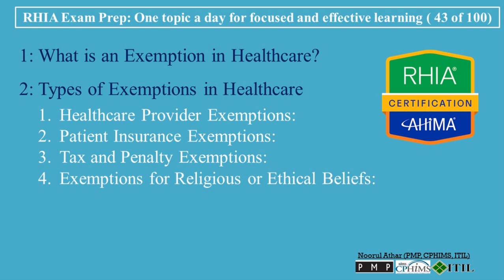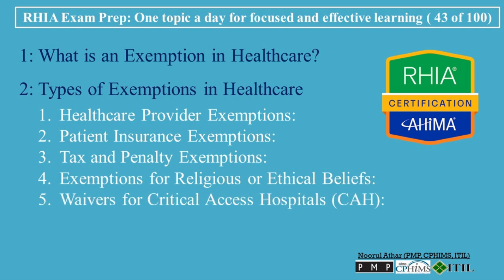Exemptions for Religious or Ethical Beliefs: Some individuals or organizations may be exempt from participating in certain healthcare services or procedures due to religious or ethical beliefs. For example, healthcare providers or patients may seek exemptions from procedures like abortion or contraception under laws that allow religious or moral exemptions. Waivers for Critical Access Hospitals (CAH), which serve rural or underserved populations, may qualify for exemptions from certain regulatory requirements, and often receive flexibility in reporting or payment structures due to their unique role in providing care to isolated communities.